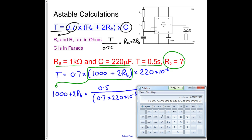So Windows calculator. So what we do is we do 0.5 divided by, and then we go open brackets, and then we go 0.7 multiplied by, and then we go 220 exponent minus 6, close brackets, equals.